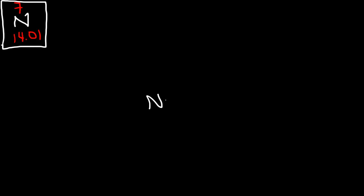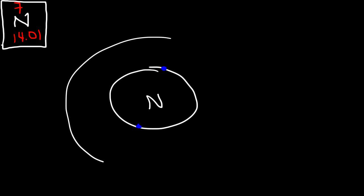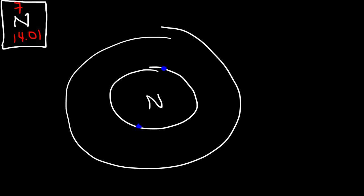Now let's draw a simple Bohr model of the nitrogen atom. In the first shell, or the first energy level, nitrogen carries 2 electrons. That's the maximum number of electrons you can have in the first energy level. In the second energy level, you can have up to 8 electrons. But we have a total of 7, so we need to place 5 in the second energy level. Now, the valence electrons are the electrons in the outermost energy level, so nitrogen has 5 valence electrons.